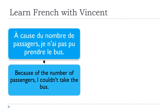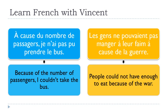« À cause du nombre de passagers, je n'ai pas pu prendre le bus. » — Because of the number of passengers, I couldn't take the bus. « Les gens ne pouvaient pas manger à leur faim à cause de la guerre. » — People could not have enough to eat because of the war. As you can see, when you use a noun, it can be a person's name, a noun with an article, a possessive or demonstrative adjective, or even the partitive. Everything is possible — just be careful about the logic of your sentence.